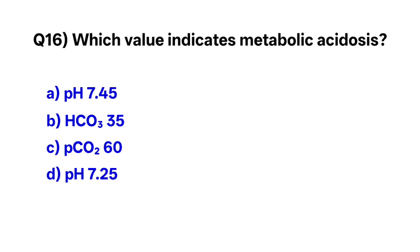Question number sixteen: Which finding indicates metabolic acidosis? The correct option is D, pH 7.25.